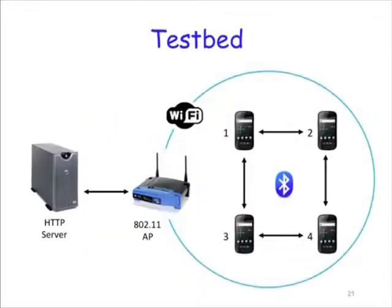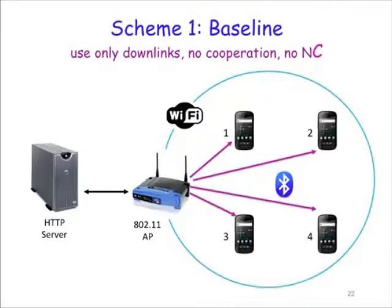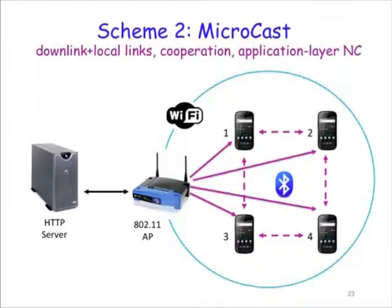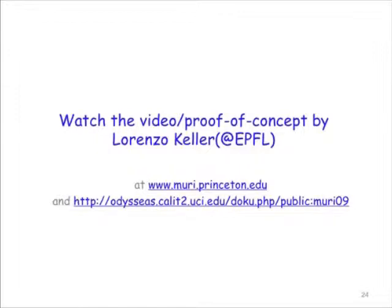Our current testbed has a number of cell phones connecting to the internet through an 802.11 access point and to each other through Bluetooth links. We compare two schemes. The baseline scheme has all phones connect to the internet through their own unicast connection and download the same information. The second scheme, our Microcast scheme, uses not only the downlink to every phone but also local links for cooperation and application-layer network coding. You can watch a video comparing the scenarios on the project website.